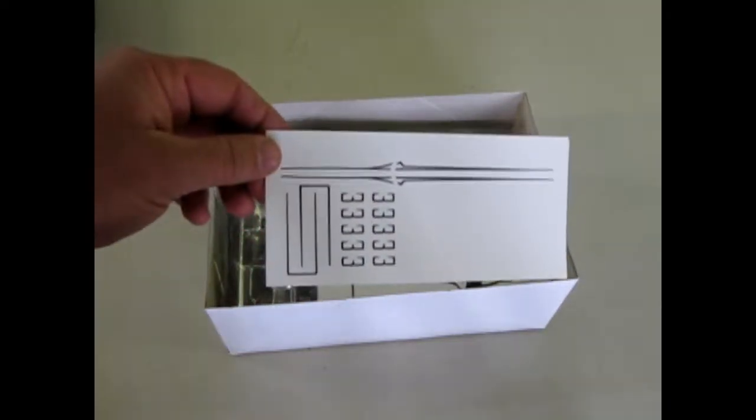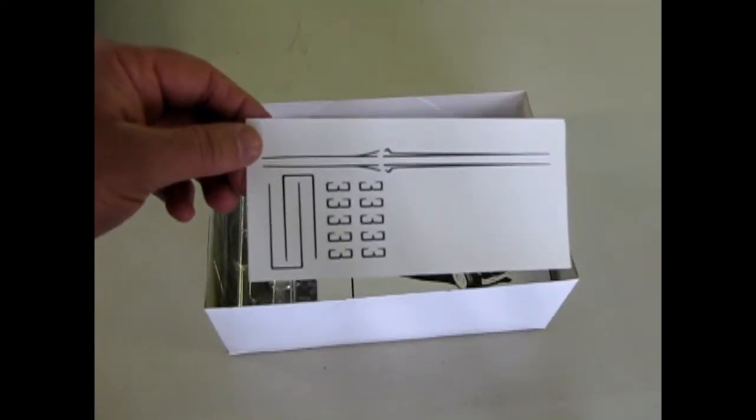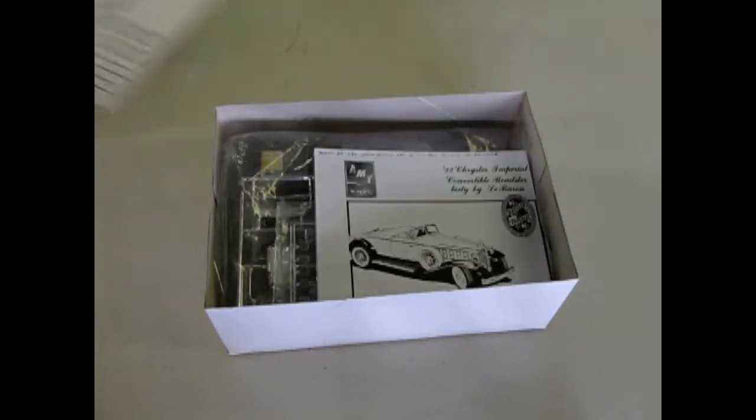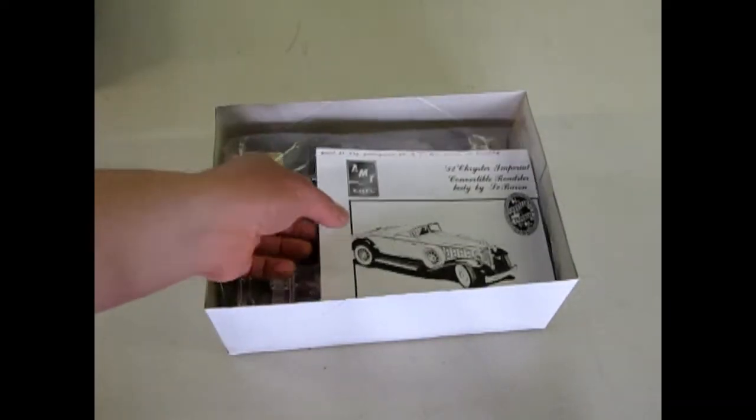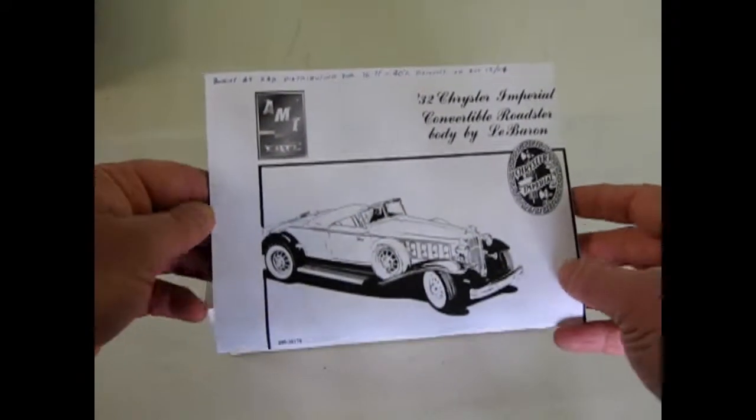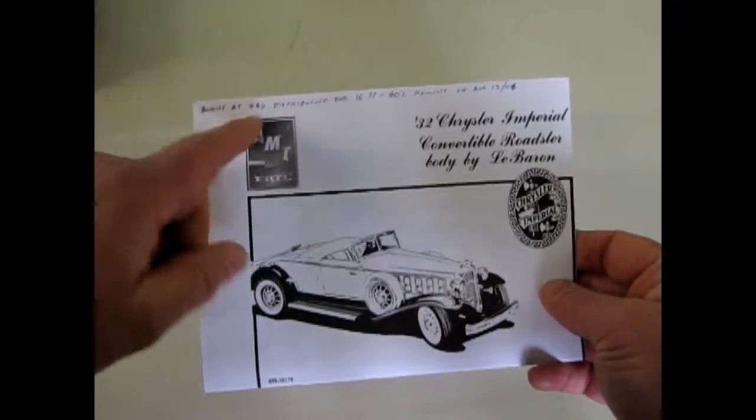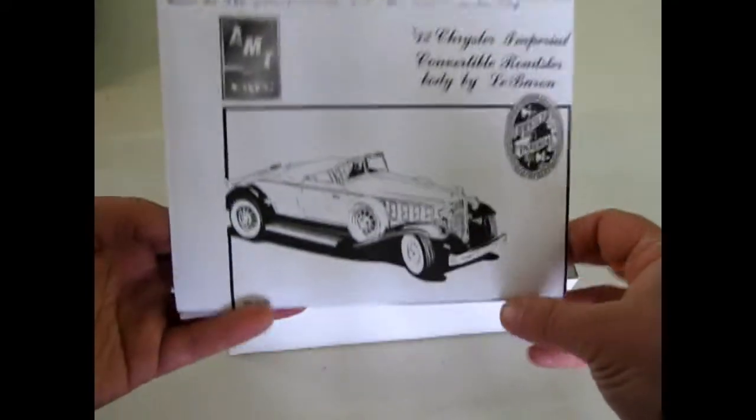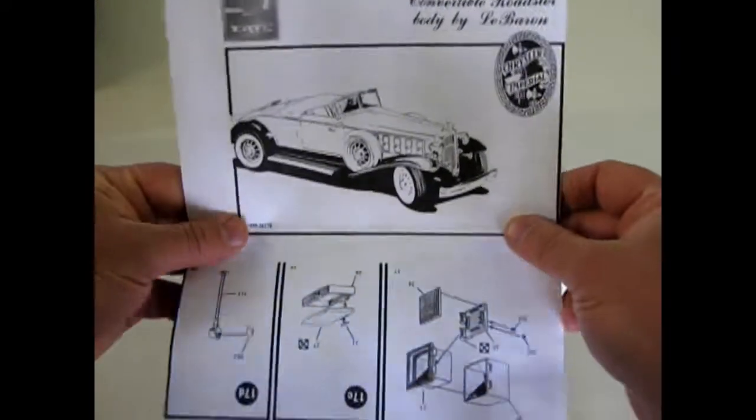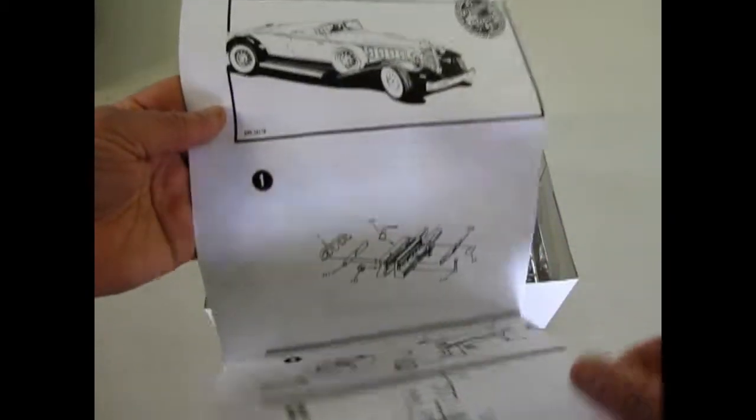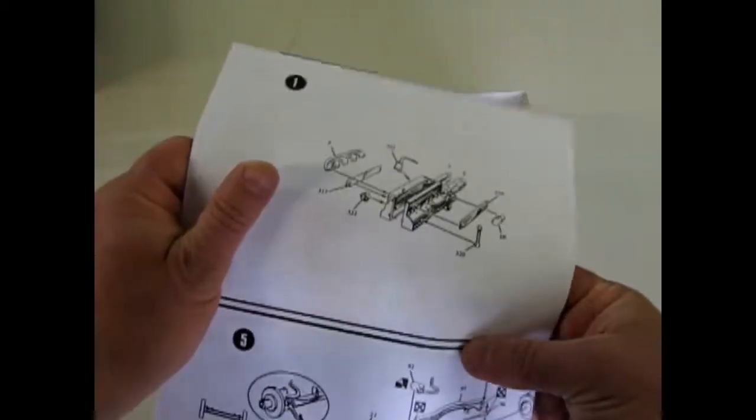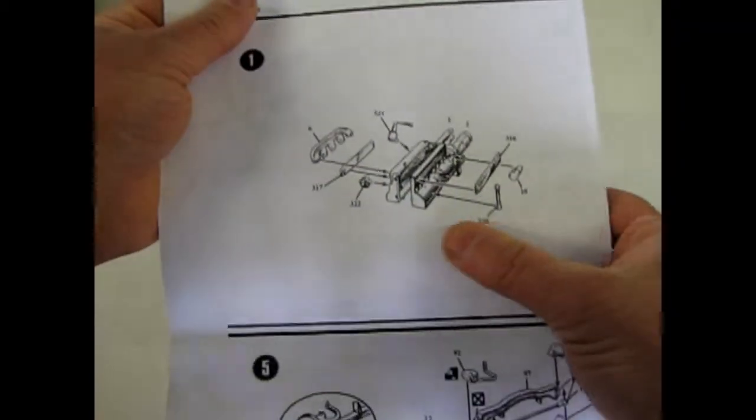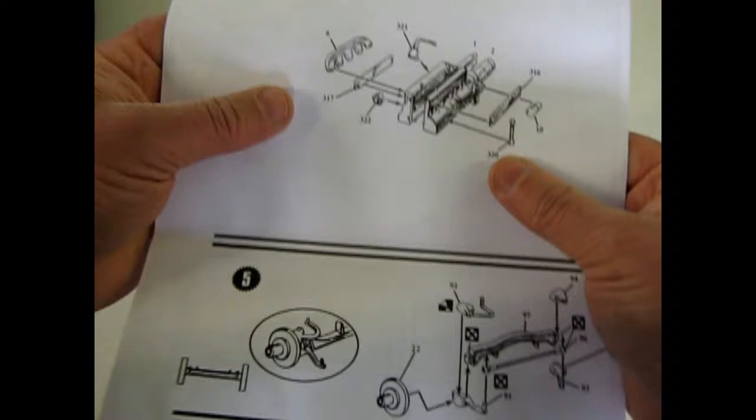Here's a nice set of decals. These are the pinstripes that go around all the little vents and things on the side of the hood. And here's our instructions for the car. I had bought this at H&D Distributing back in August 15, 2004. This is like one of the first kits I got when I opened my hobby shop for myself back in 2004.